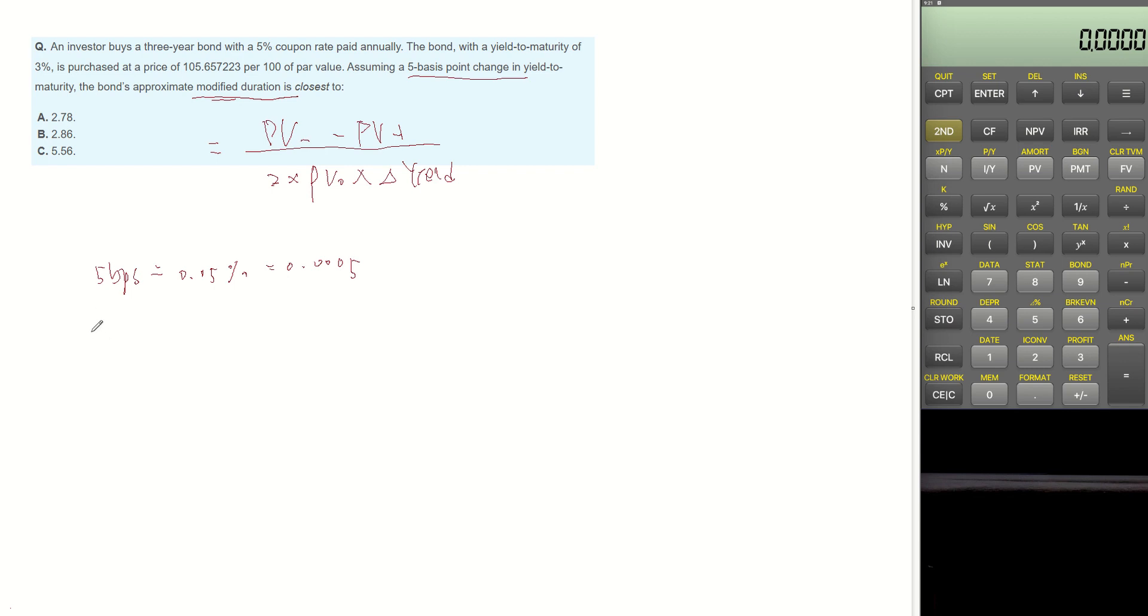When payment is 5 and frequency is 3 and R is 3% and future value is 100, present value in this question set is 105.657223.